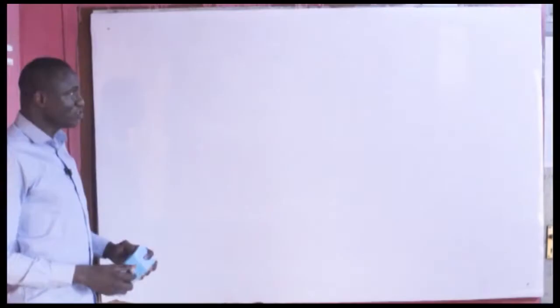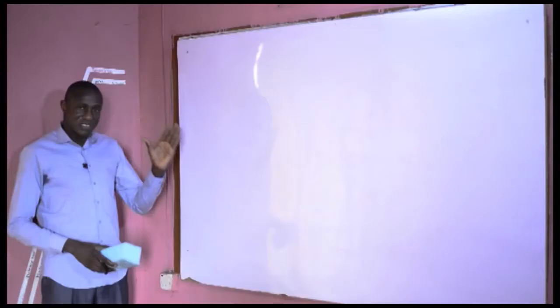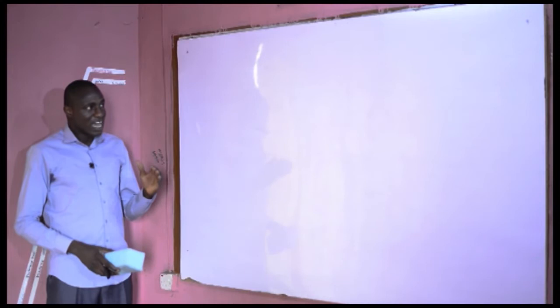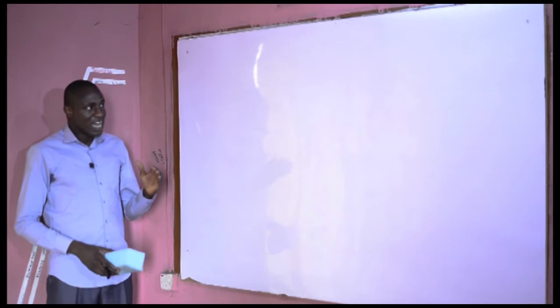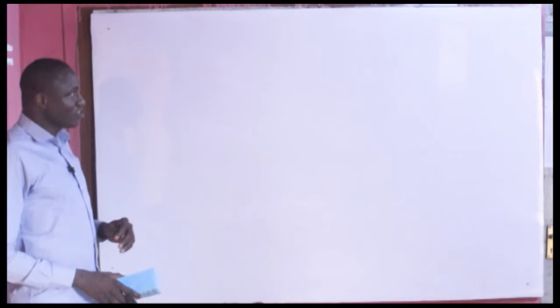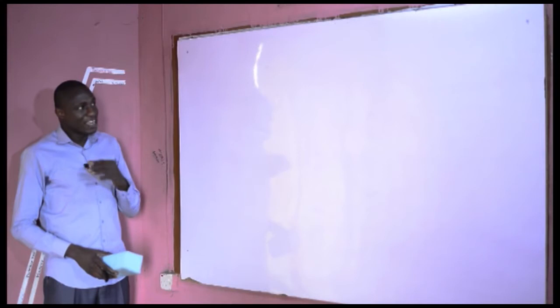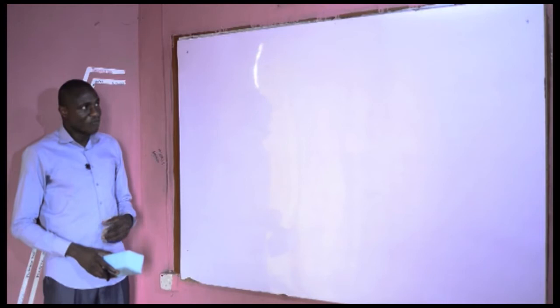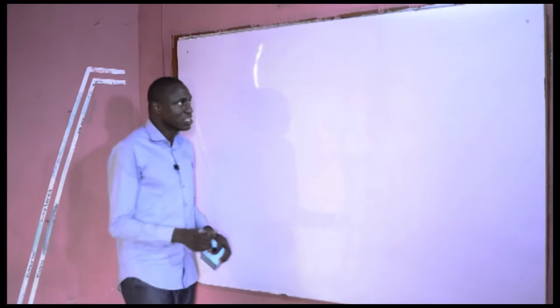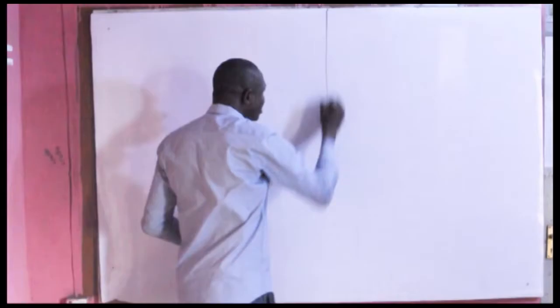Today we are going to discuss electronegativity. At the end of this class you should be able to identify the most electronegative element in the periodic table, explain the variation in electronegativity across the periodic table, distinguish between electronegativity and electron affinity, and identify the factors that affect electronegativity values.